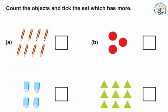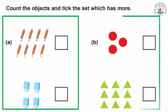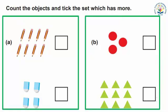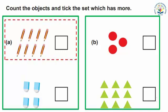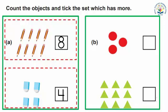Count the objects and tick the set which has more. Students, you can see two sets on the screen — Set A and Set B. First we will look at Set A. Count the pencils and write the number in the box. There are eight pencils. Now count the erasers and write the number in the box. There are four erasers. Now which has more? Yes, pencils are more than erasers.